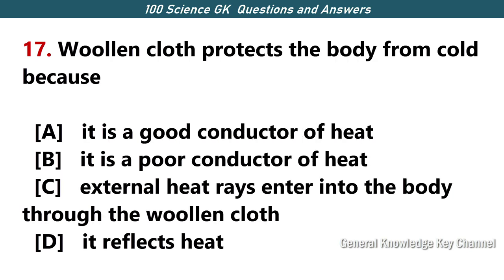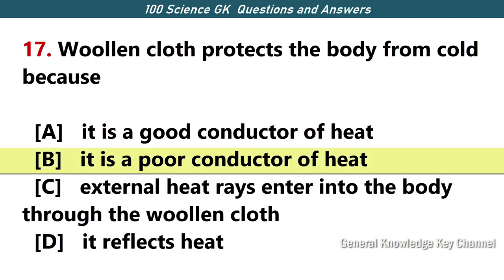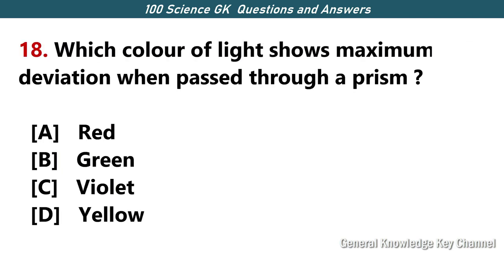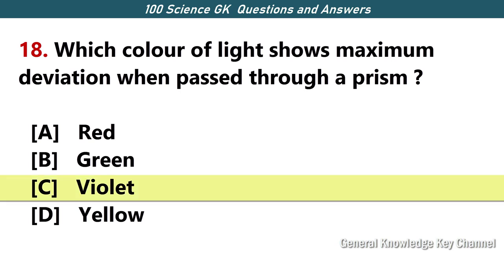Woollen cloth protects the body from cold because — Answer B — it is a poor conductor of heat. Which color of light shows maximum deviation when passed through a prism? Answer C — violet.